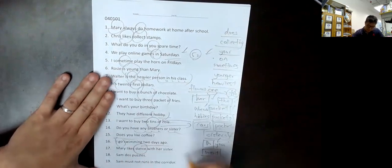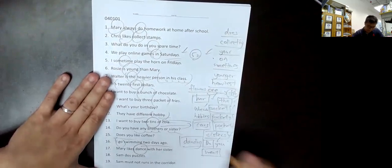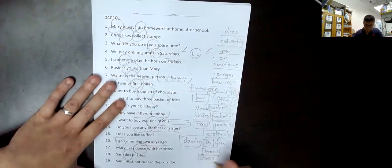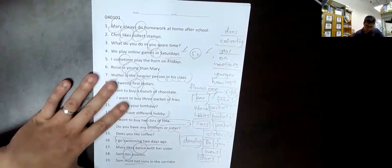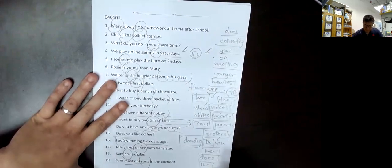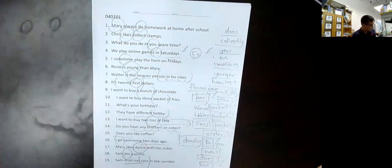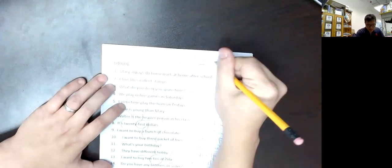She likes dancing. After like, use -ing, usually E at the end is dropped, dancing, dance puzzles. Question 19, must not - modal verb. After modal verbs use base form. After modal verbs use base form. Just that simple. Review a little bit, adverbs. Remember adverbs only have two positions.